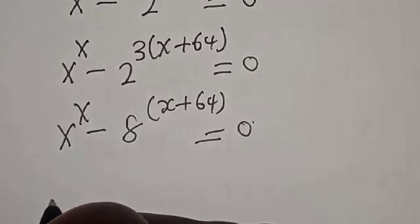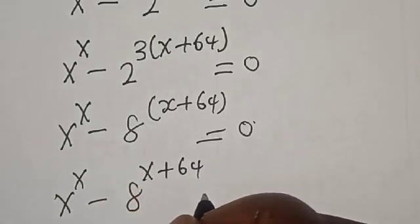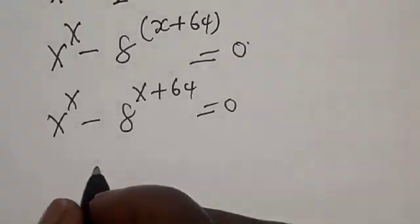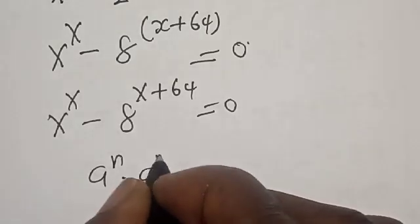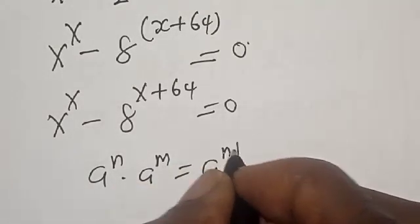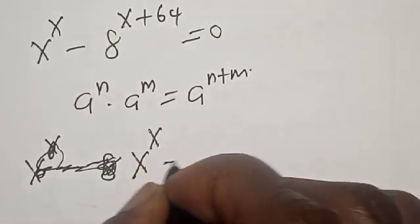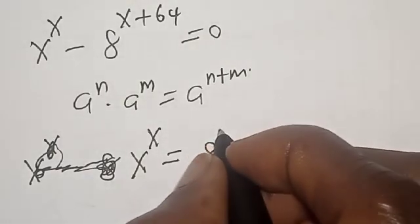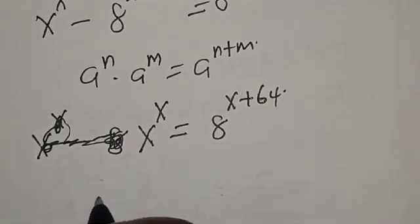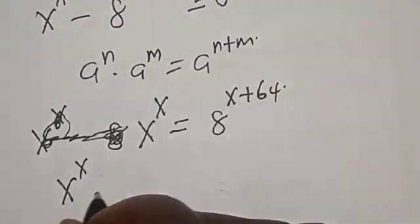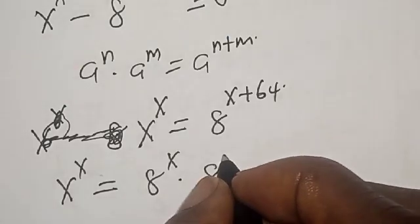Now let's see what will happen. s raised to power s, minus 8 raised to power s, plus 64 is equal to 0. Note that e raised to power n multiplied by e raised to power m is equal to e raised to power (n + m). Now we have s raised to power s is equal to e raised to power (s + 64), which means s raised to power s equals e raised to power s multiplied by e raised to power 64.